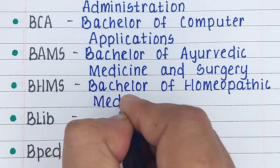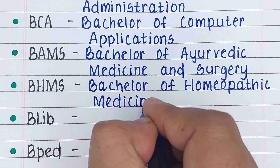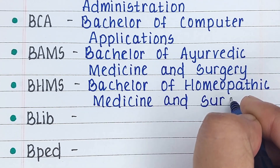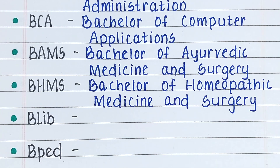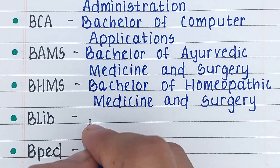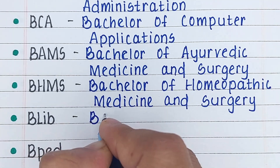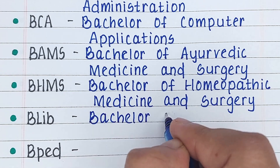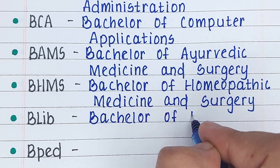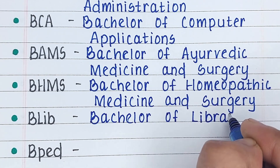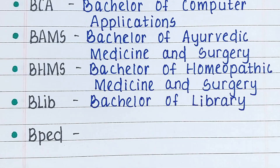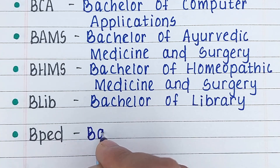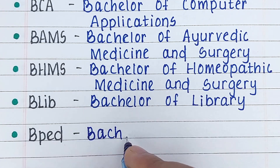BHMS stands for Bachelor of Homeopathic Medicine and Surgery. BED stands for Bachelor of Education. Next is BLIB. BLIB stands for Bachelor of Library.